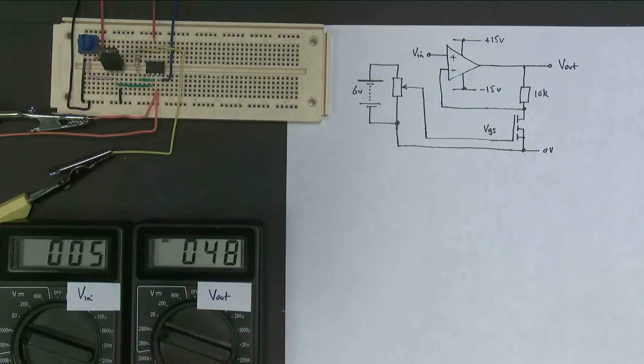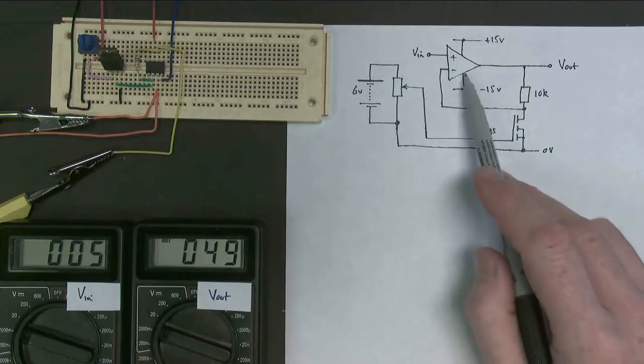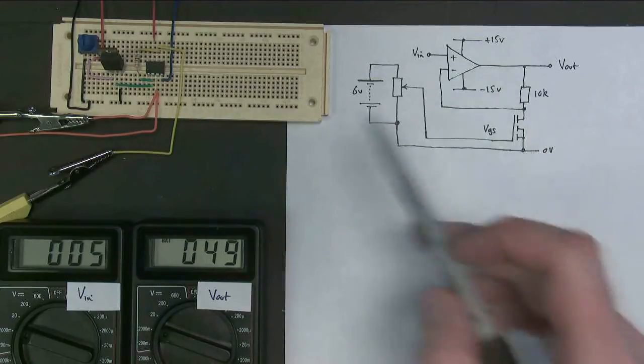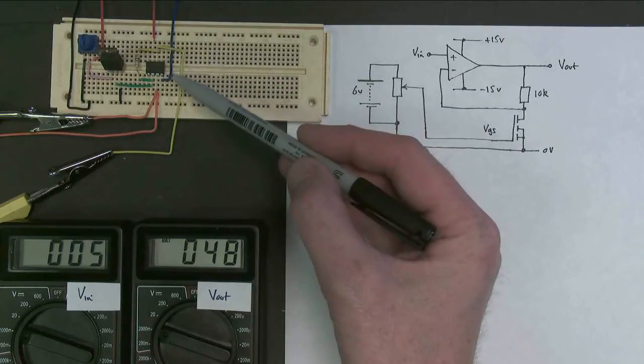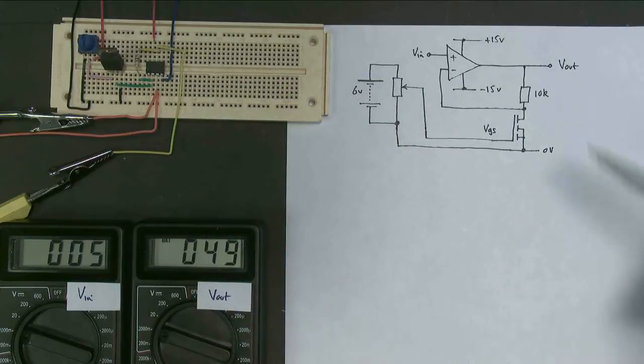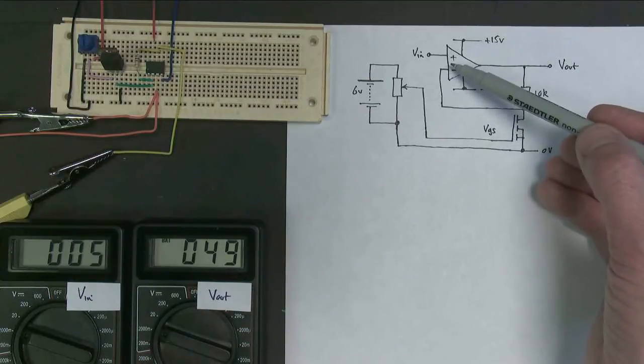So what I've got here is an op amp running off plus or minus 15 volt power supplies. Just here, the red wire, the blue wire. I've got it wired up with negative feedback to make it into an amplifier.